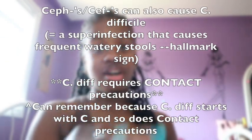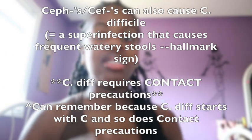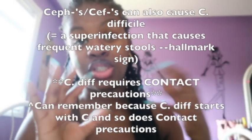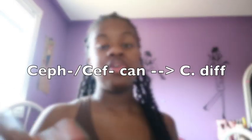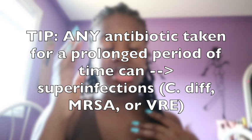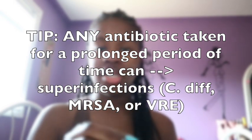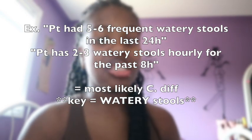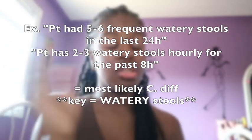Cefs can cause C. difficile, which is a contact-precaution super-infection. C. diff, taken for a prolonged period of time, causes that super infection — and both start with C, which helps you remember the connection. The hallmark sign of C. diff is frequent, watery stools — apparently with an extremely foul odor. C. diff affects the GI system, as does VRE (vancomycin-resistant enterobacteria). Both are super infections treated with strong antibiotics.